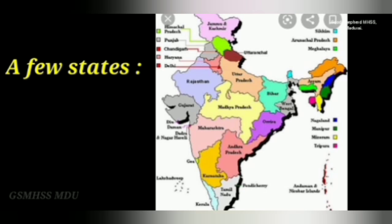Number 25: Tripura, capital Agartala, official languages Bengali and English. Number 26: Uttarakhand, capital Dehradun, official language Hindi. Number 27: Uttar Pradesh, capital Lucknow, official language Hindi. Number 28: West Bengal, capital Kolkata, official languages Bengali and Nepali.